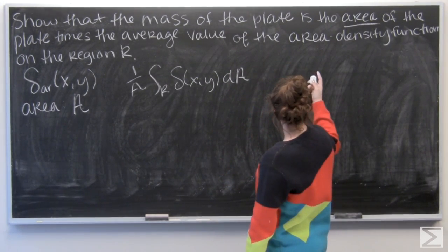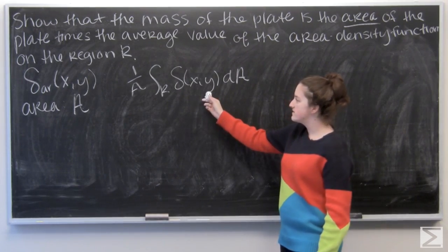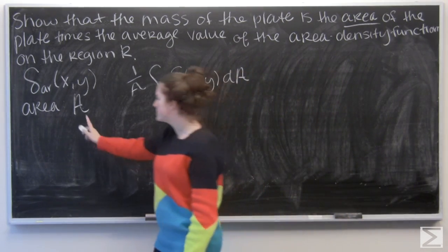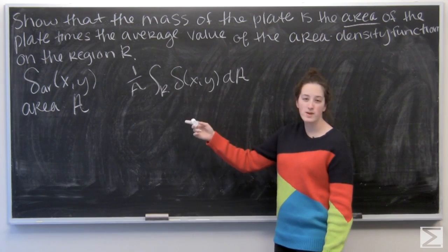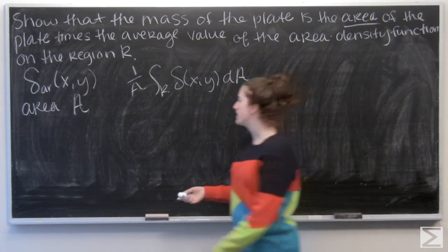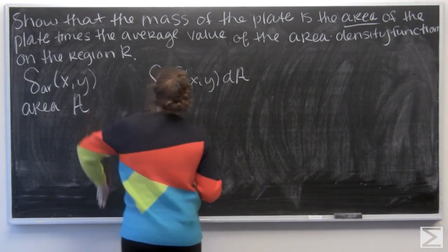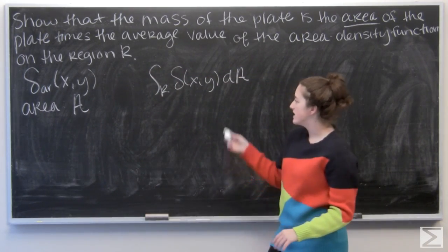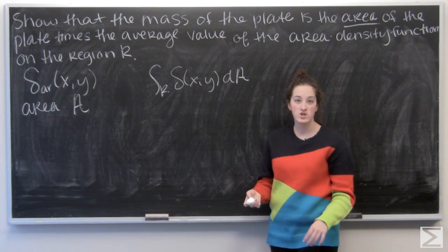I want to show that the mass of the plate is this function times area. Well, what happens when I multiply area by one over area? It just cancels out. So I'm just left with the integral of the area density function over the region.